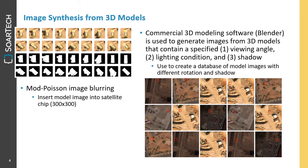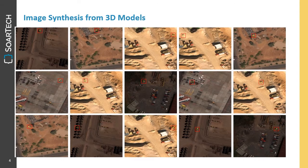We're going to merge these XView data with 3D models to create synthetic images. Commercial 3D modeling software is used to generate images from 3D models containing a specified viewing angle, lighting condition, and shadow. This creates a database of model images with different rotations and shadow, from which random selections can be used to merge with XView data using Mod Poisson image blending. On closer examination of the synthetic image outputs, however, we can see that the edges of objects are too clean and that the objects themselves are often the wrong color for the associated background images — in short, they are clearly synthetic images.